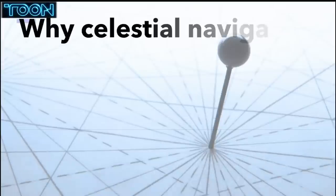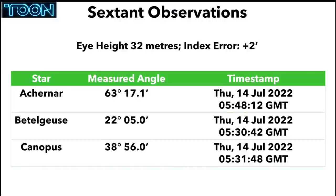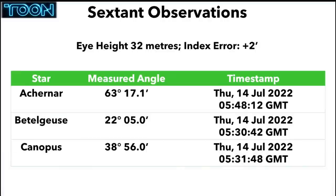Ruhith: I pre-recorded my presentation, so I'll just ask MCT to play it. It will go through why things only work on a globe. Good morning, good afternoon, good evening — this is why celestial navigation only works on a globe. Here is my set of observations for the debate. I've been given an eye height of 32 meters and an index error of two arc minutes. My three stars are Achenar, Betelgeuse, and Canopus, with their angles and times of observation.